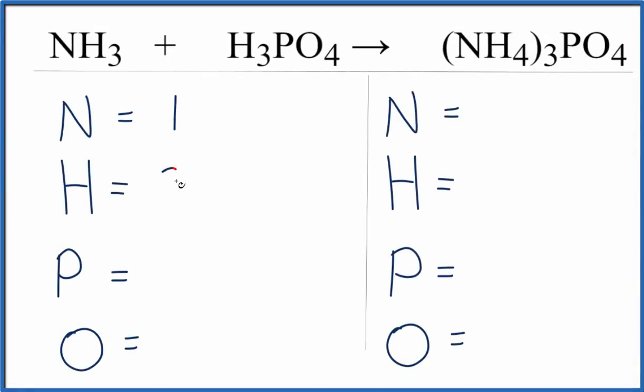We have one nitrogen, we have three hydrogens right here, and we have the three right here. That gives us six hydrogens, one phosphorus, and then the four oxygens.